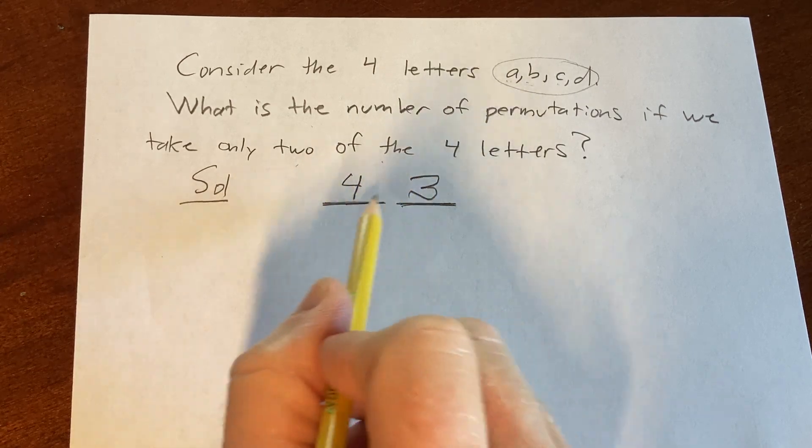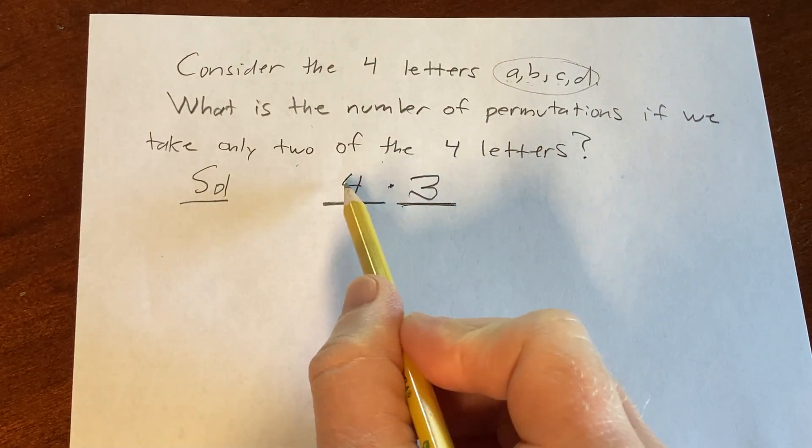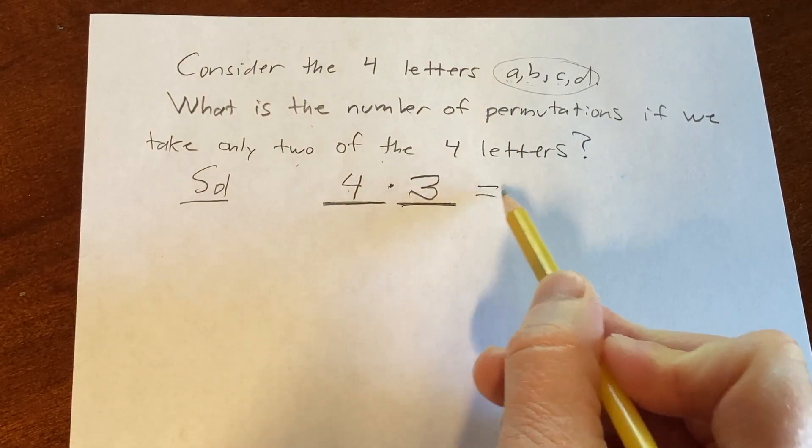The number of ways to pick both letters is the product by something called the multiplication rule. So 4 times 3 is equal to 12.